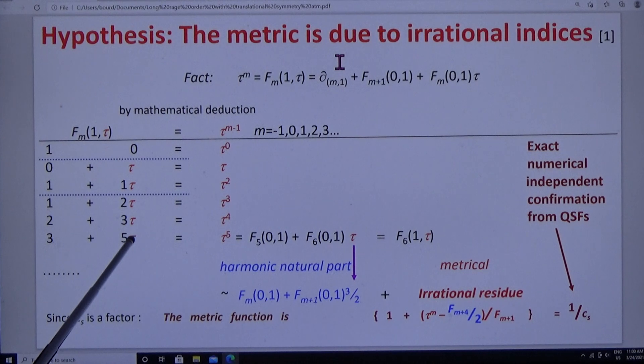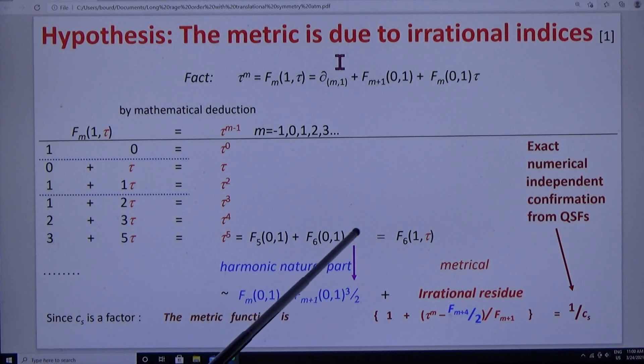Now, we can approximately rationalize it by replacing tau by the rational fraction 3 halves, and then we get a Bragg-like function. And if we subtract that from the irrational index, we get the irrational residue. And this has important properties. We'll come back to this denominator in a moment.